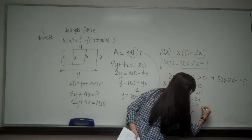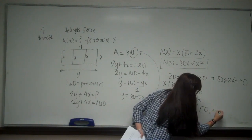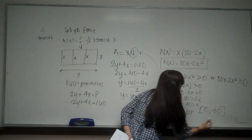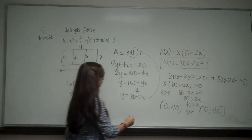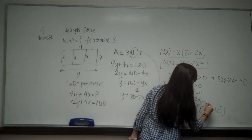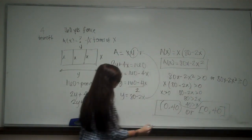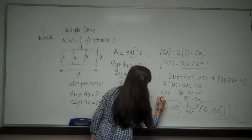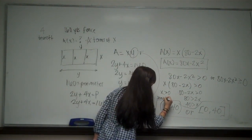So we know that it has to be between zero and 40. Or with brackets, zero and 40. So this is the domain.